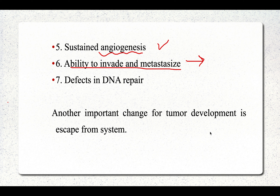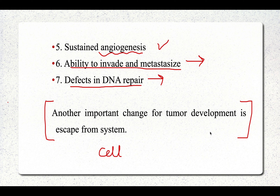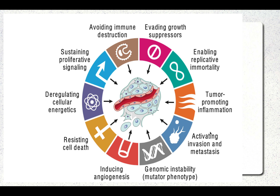Sixth is defects in DNA repair — if there is DNA damage, the cell is unable to repair it and therefore becomes neoplastic. Seventh, the neoplastic cell must evade the immune system. Collectively, these seven alterations lead to the formation of neoplasia.